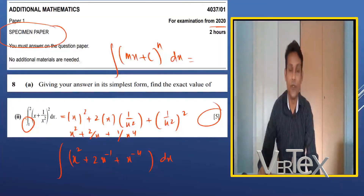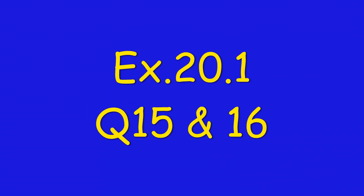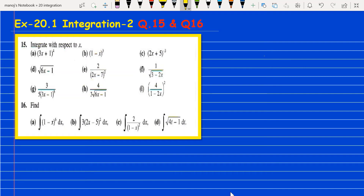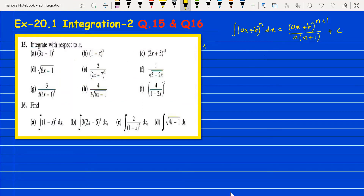Our next target is Exercise 20.1. The formula is: the integral of (ax plus b) to the power n dx equals (ax plus b) to the power n plus 1, divided by a multiplied by n plus 1, plus c. For question 15, the first part: integrating (3x plus 1) to the power 4 gives (3x plus 1) to the power 5, divided by 3 into 5, plus c. Simplifying: 3 times 5 is 15.